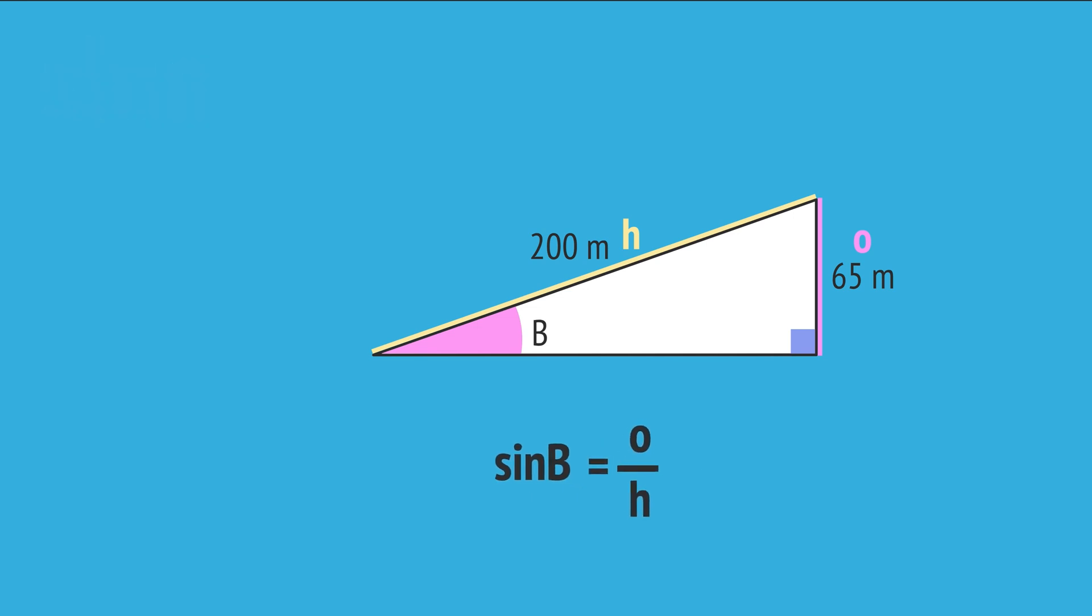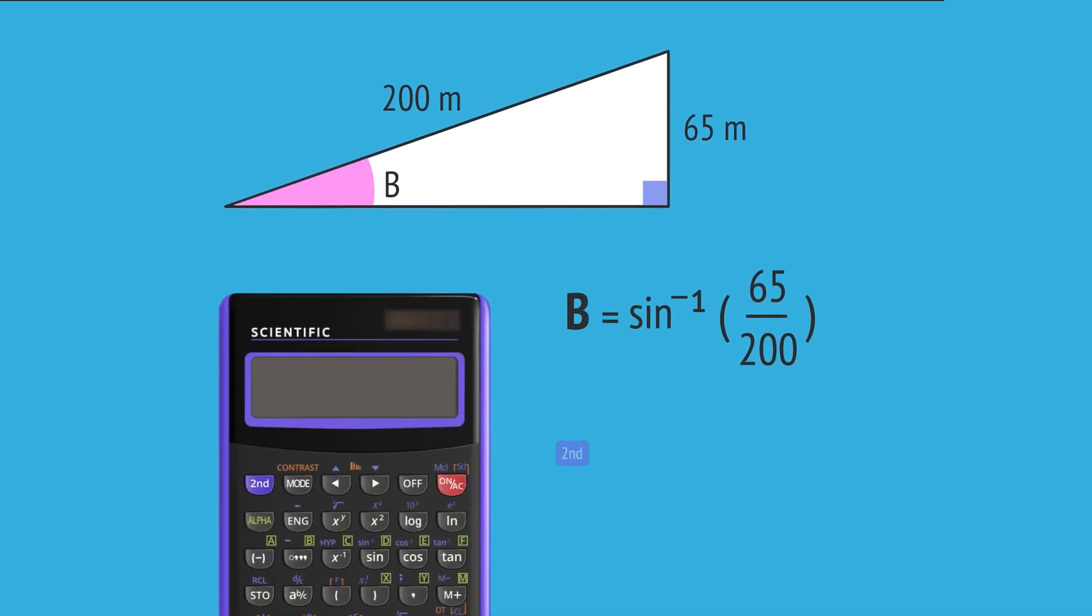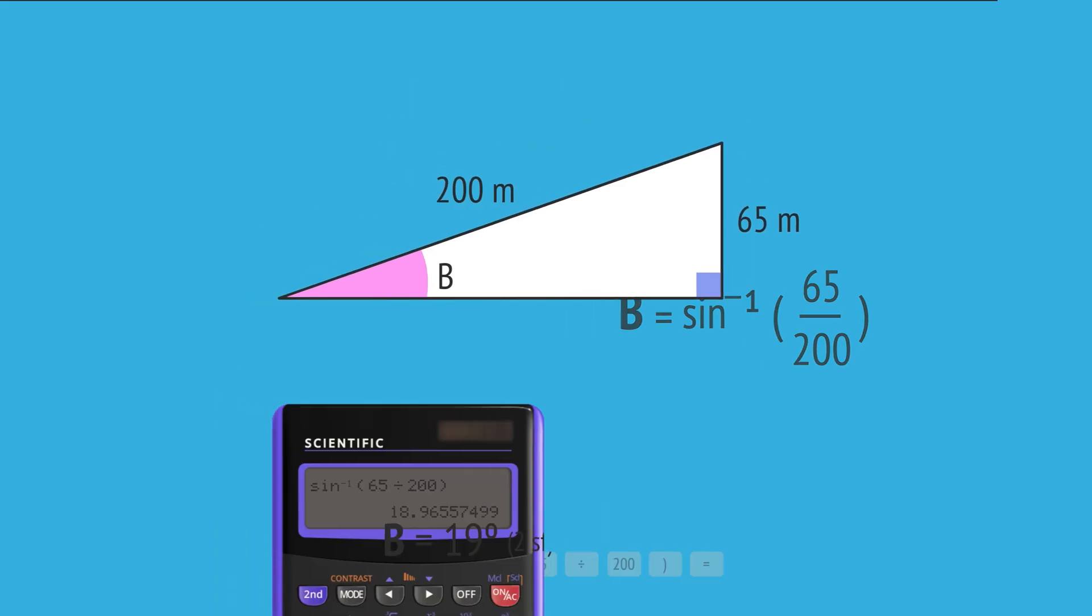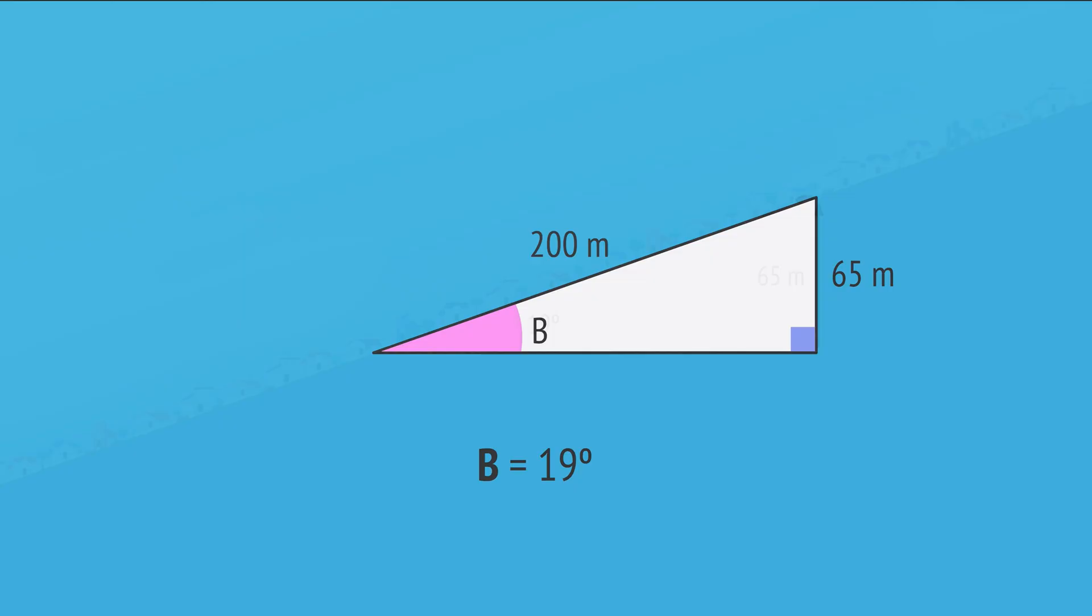Substituting the values into the formula, we write sine B equals 65 over 200. We use the inverse sine function to work out angle B, and enter this into a calculator, which gives us an answer of 19 degrees to the nearest degree. And therefore, the angle of inclination of Baldwin Street.